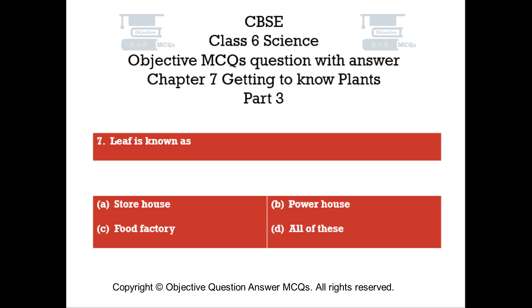Question number 7. A leaf is known as. Option A: Storehouse. Option B: Powerhouse. Option C: Food Factory. Option D: All of these.